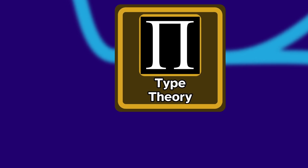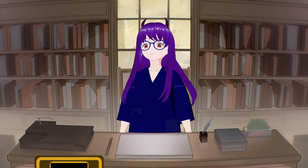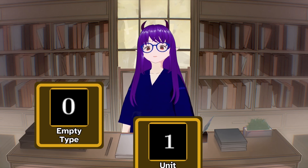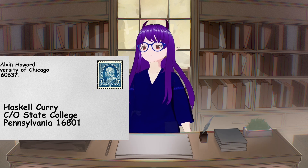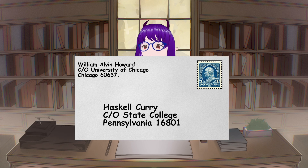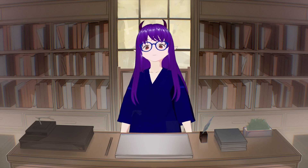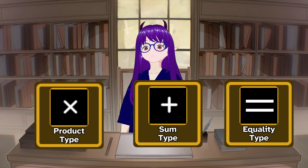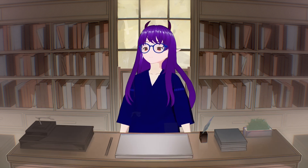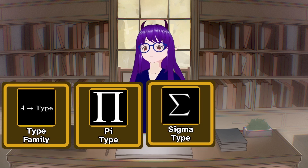Type theory is such a large topic, so we are going to cover it in three parts. In this video I'm going to introduce the empty type, the unit type, and function type, then tell you all about the Curry-Howard correspondence — a powerful result that allows us to link computer programming with the writing of mathematical proof. In the next video I'm going to introduce product types, sum types, and equality type.